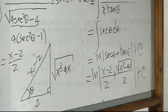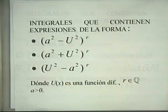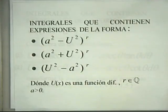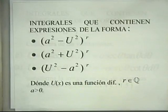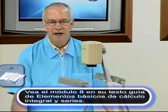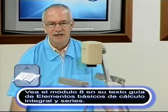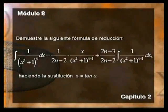Estos son entonces los tres tipos de sustituciones trigonométricas: cuando aparece a² menos u² a la r, cuando aparece a² más u² a la r, y cuando aparece u² menos a² a la r, siendo u una función diferenciable, r un número racional y a una constante positiva. Se agradece la atención y se pide repasar el módulo 7 y el módulo 8, ya que serán fundamentales para el próximo módulo sobre integración por descomposición en fracciones parciales.